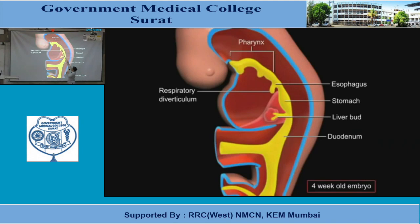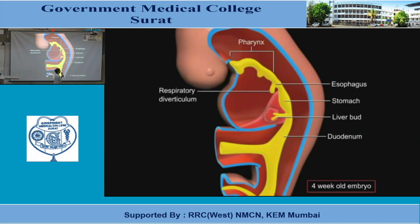So, this is the tracheoesophageal fistula — a fistula between the trachea and esophagus. Normally, this structure is totally separated. If separation doesn't happen, this problem arises. So, tracheoesophageal fistula — what is the anatomical basis? The tracheal diverticulum arises from the ventral aspect of the developing esophagus.